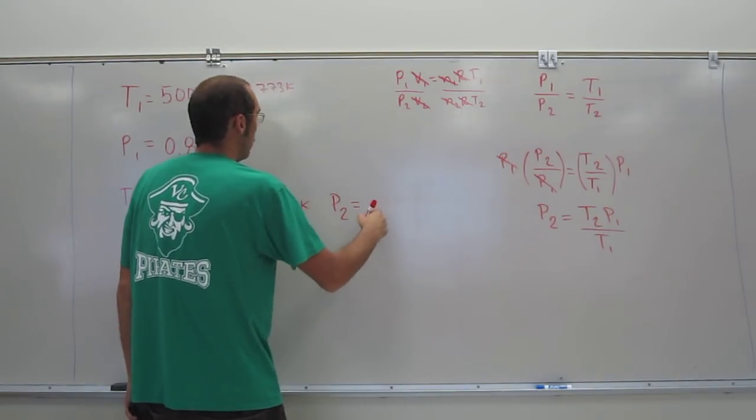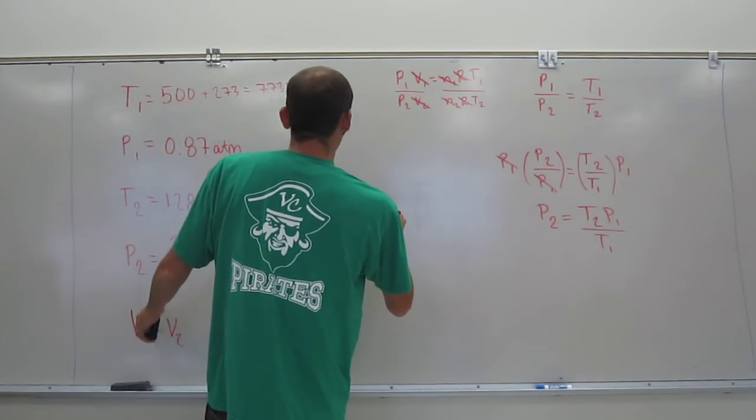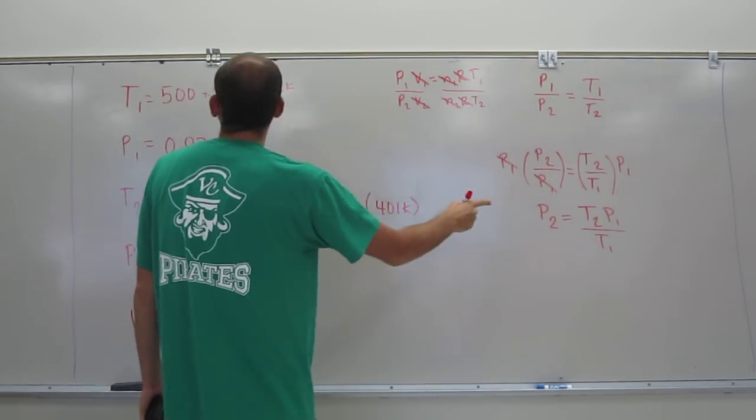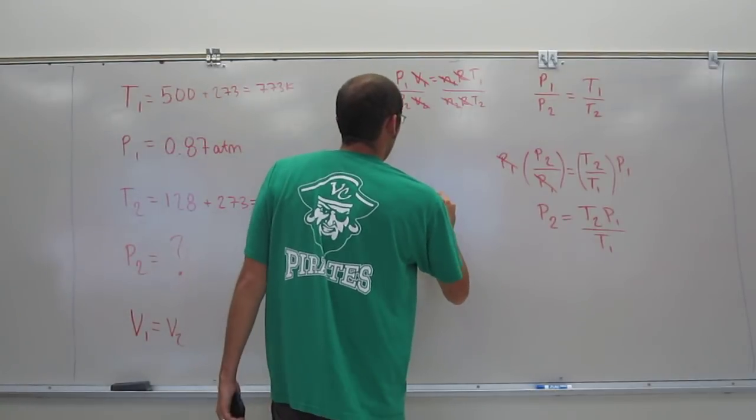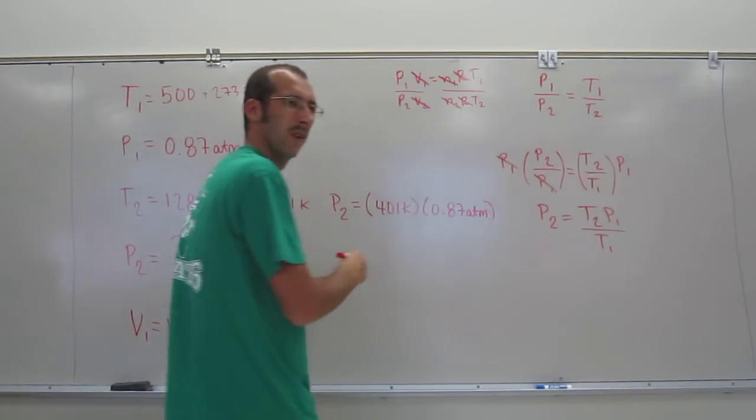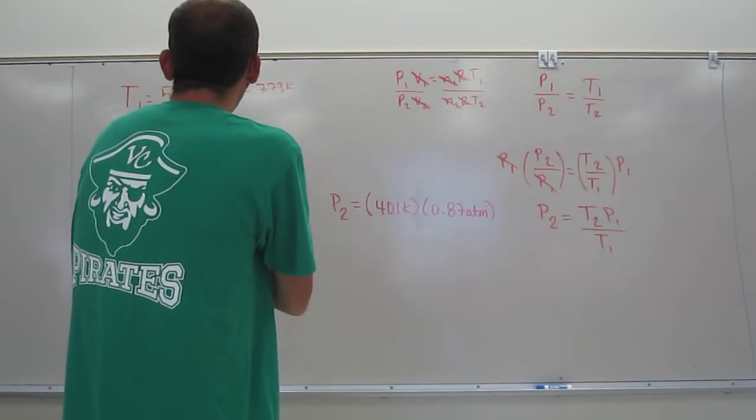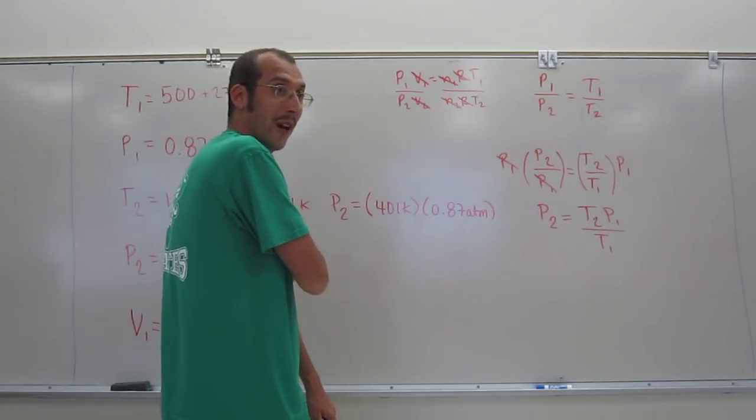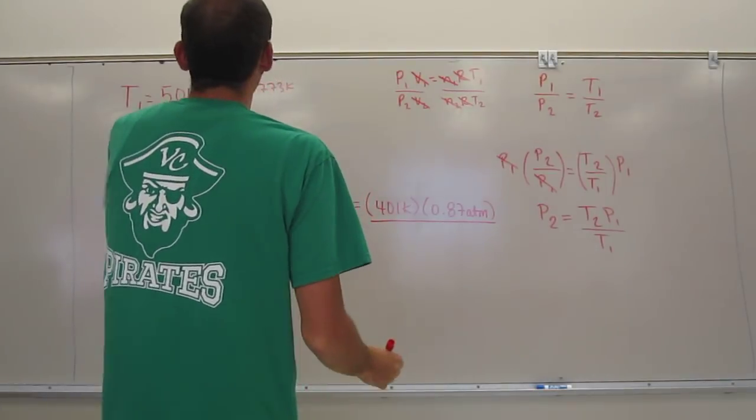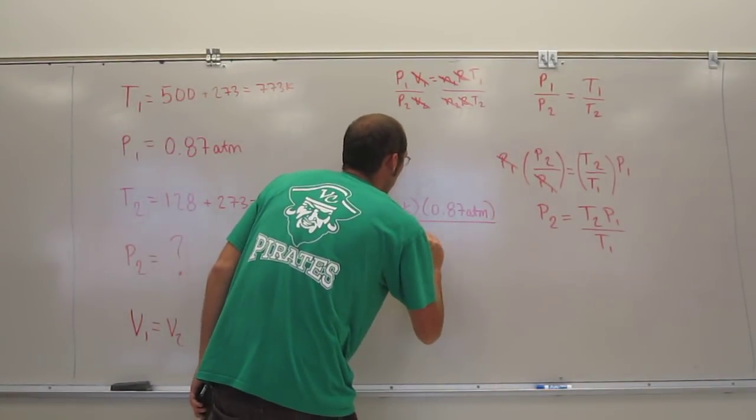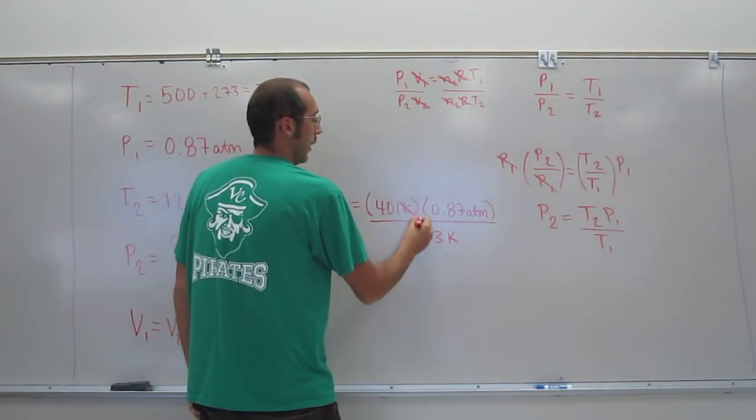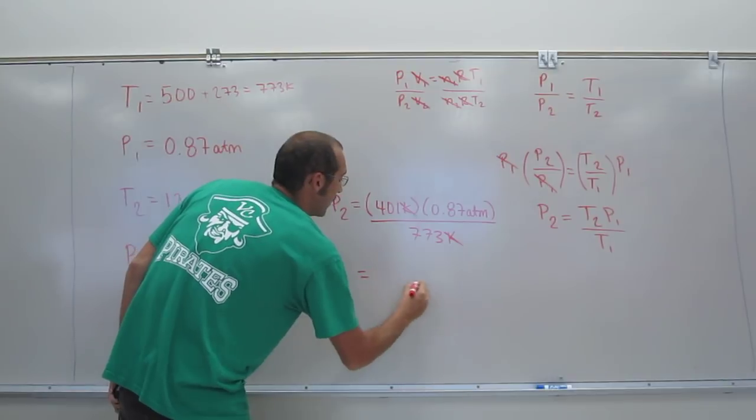So P2 equals, well, T2, which is 401K, P1, 0.87 atm. It's very similar to what we were doing today, remember? And in fact, you'll see that it's very similar, the things that you just keep repeating the same thing. And then T1, of course, is going to be 773 kelvin. And, of course, kelvin cancels, leaving you with atm.